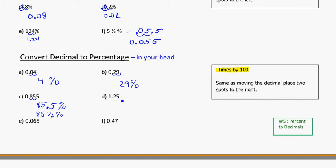Here, I've got 1.25. Because this number is already bigger than one, I kind of know it should be a really large percentage. And if I move it over two spots, I get 125%.